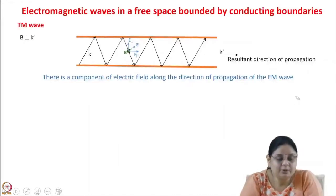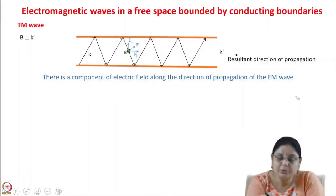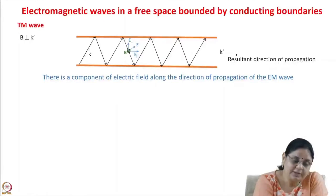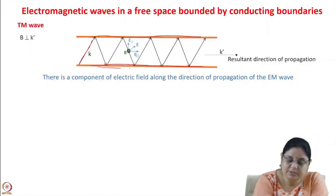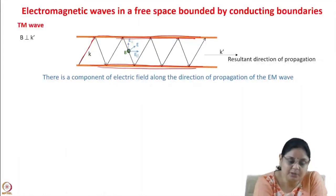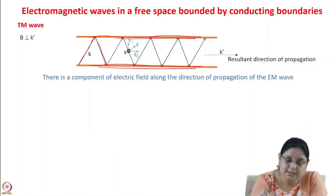Let us see what happens to electromagnetic waves bounded by conducting boundaries. If we have an electromagnetic wave propagating with propagation constant k and we place conducting boundaries on both sides, the wave can no longer propagate past those boundaries. It gets reflected and will travel inside the space by multiple reflections.